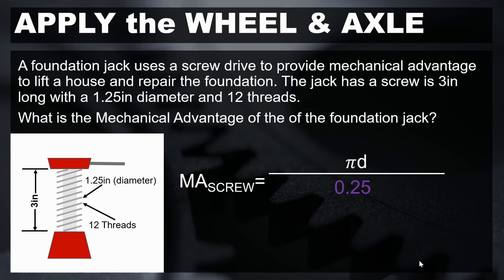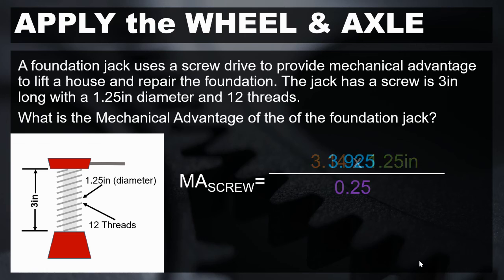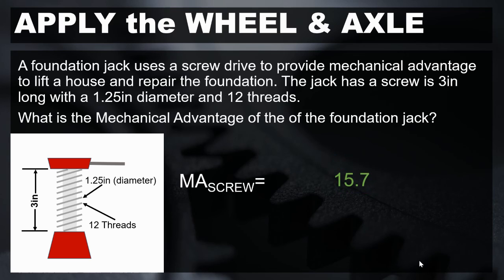In the numerator, we have pi times d. We know that pi is equal to 3.14, and in our problem the diameter of the screw is 1.25 inches. When we multiply these together, we get 3.925. With 0.25 in the denominator, when we factor all of this together, the mechanical advantage of this screw is 15.7.